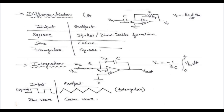If you look at the position of the capacitor and resistance connected in the circuit, you will find that they are interchanged between the two circuits. In the differentiator, the capacitor is present first and then the resistance. In the integrator, the resistance is present first and then the capacitor. A memory tip: differentiator starts with 'D', and in the alphabet, 'C' and 'D' are close — so in the differentiator, the capacitor (C) comes first.